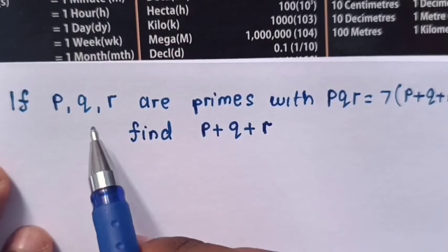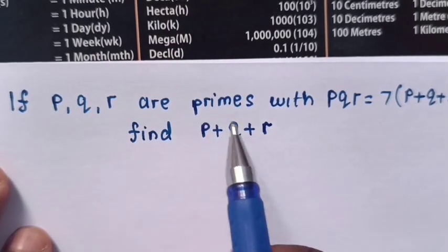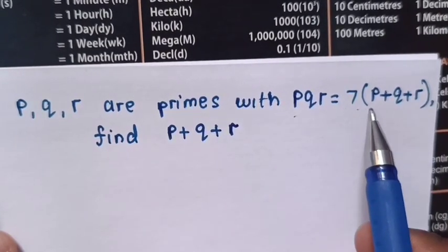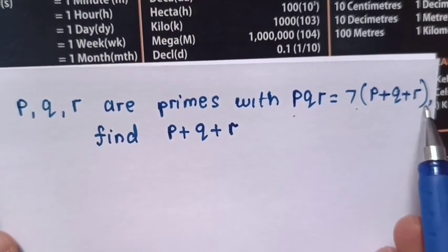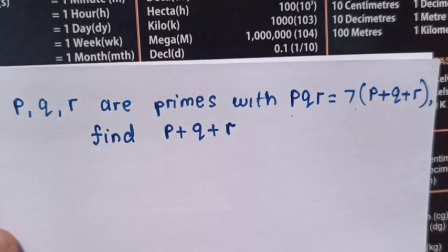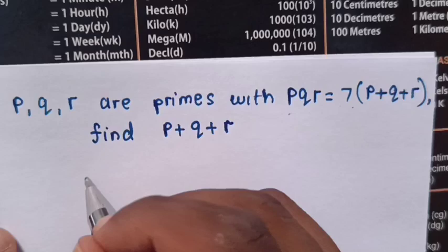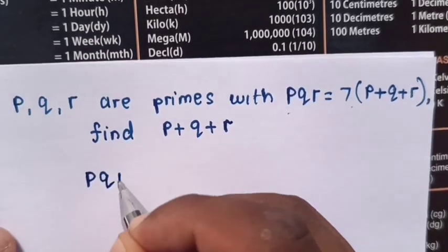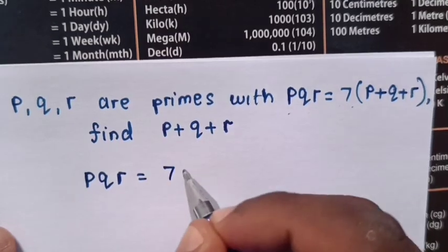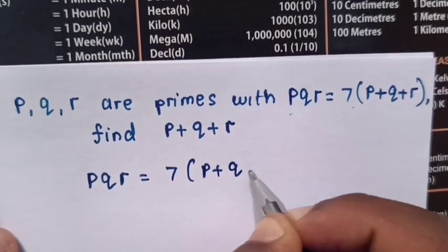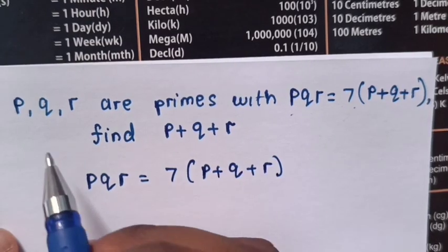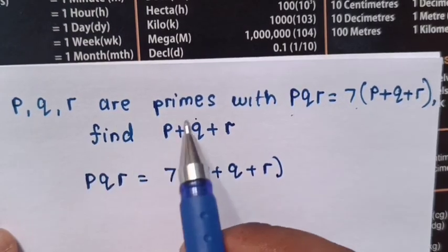If P, Q, R are primes with PQR equals 7 times P plus Q plus R, find P plus Q plus R. From PQR equals 7 times bracket P plus Q plus R, but P, Q, R are primes.